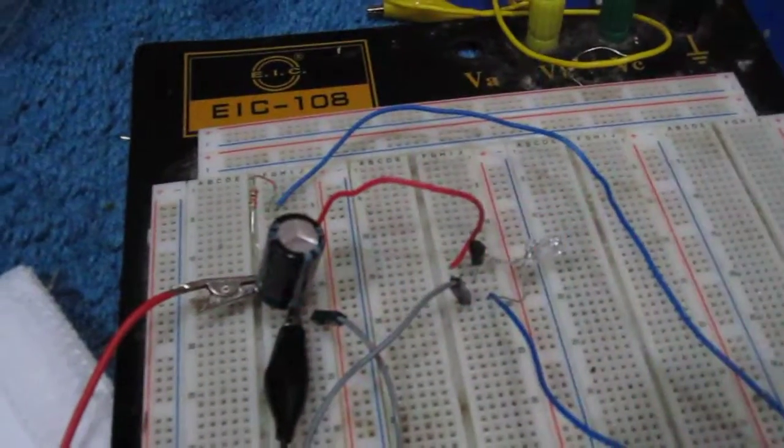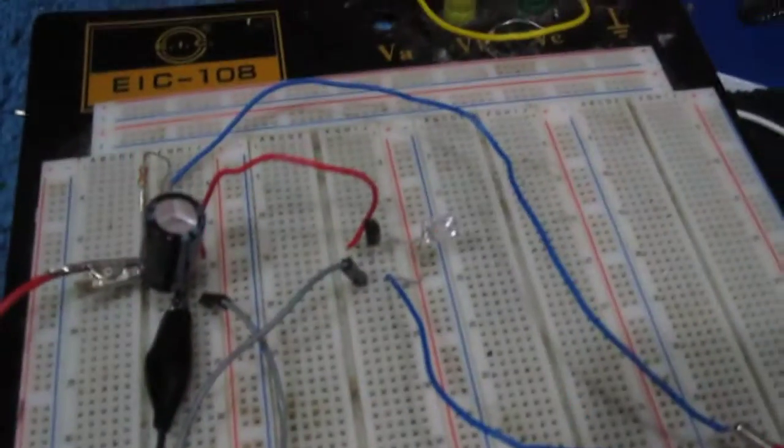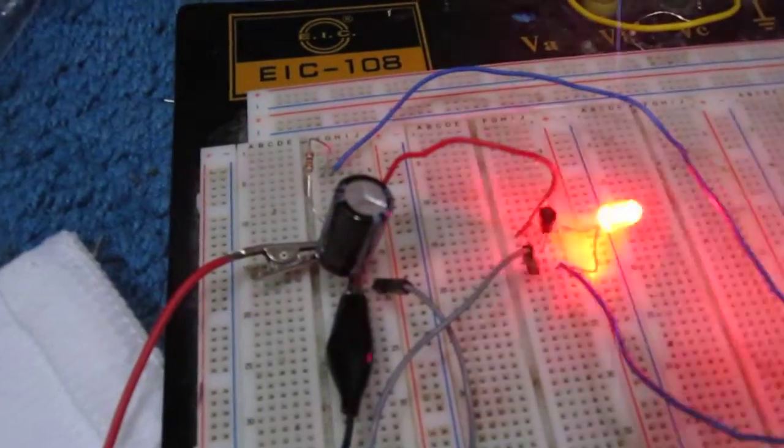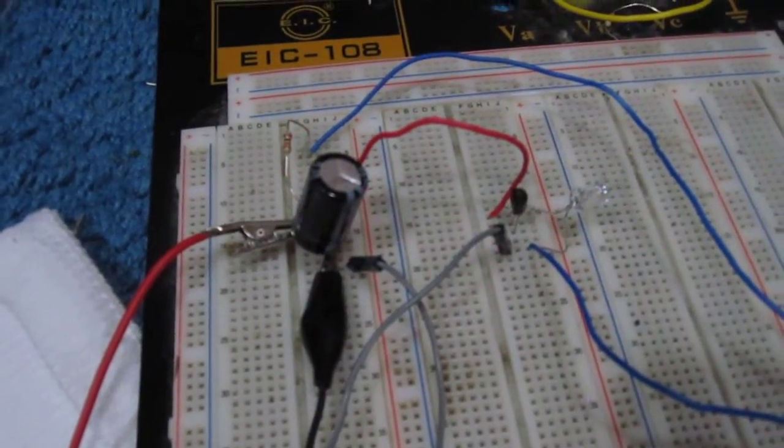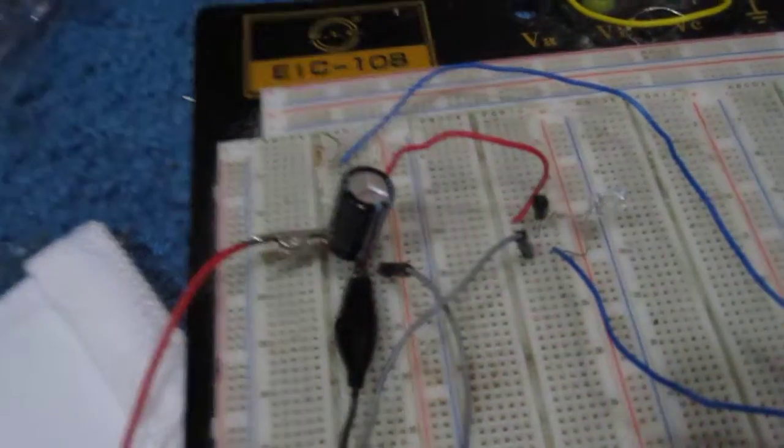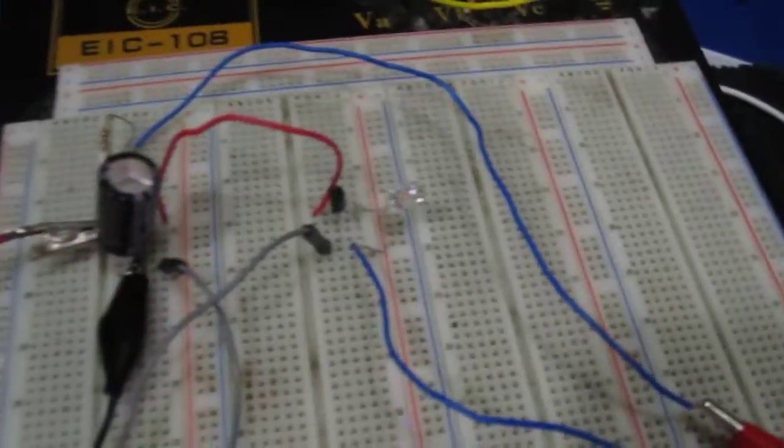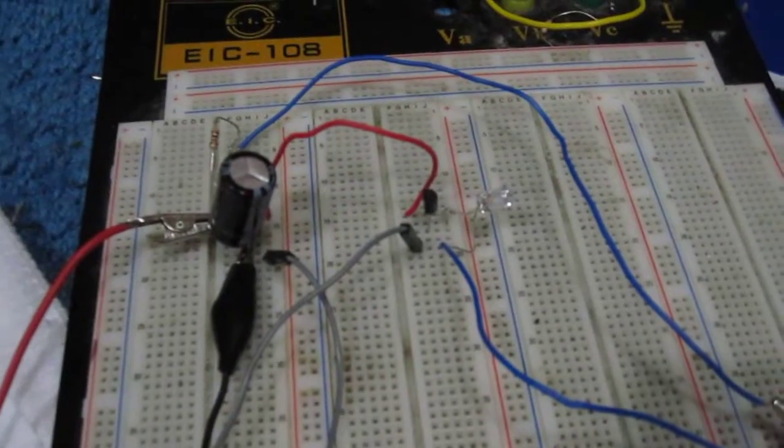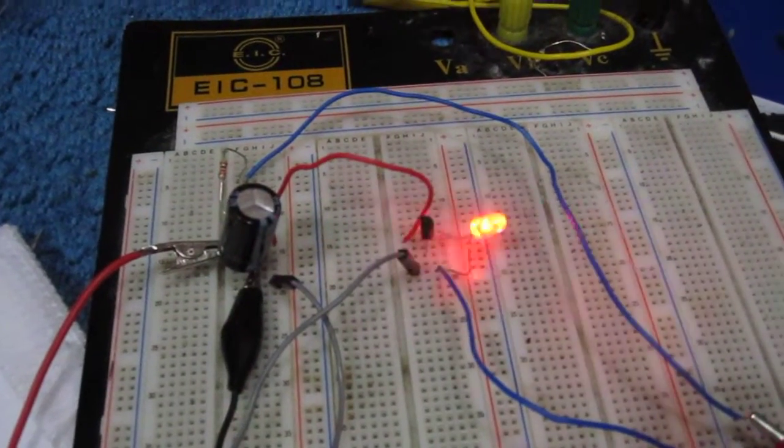Once this happens, the capacitor discharges, turning on the LED, and then the capacitor recharges. When it hits that value again, it discharges. It's this constant cycle that creates the oscillations you see in this circuit.